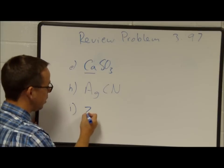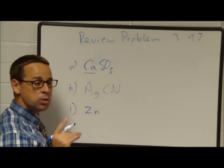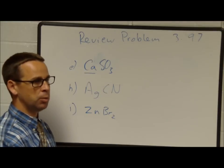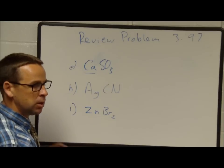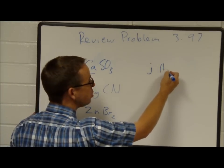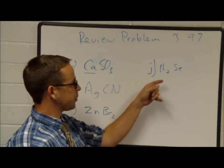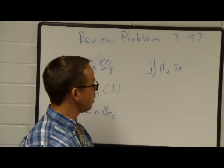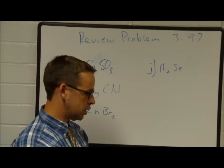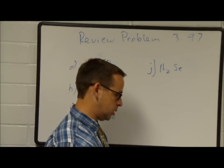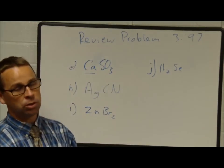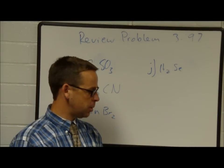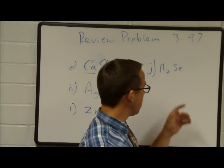ZnBr₂: zinc almost always forms only a plus 2 ion, so this is just called zinc bromide — an ionic compound with a metal and nonmetal. H₂Se: selenium is a nonmetal, and hydrogen is also a nonmetal, so this is a molecular compound. Formally it's called dihydrogen selenide or hydrogen selenide.